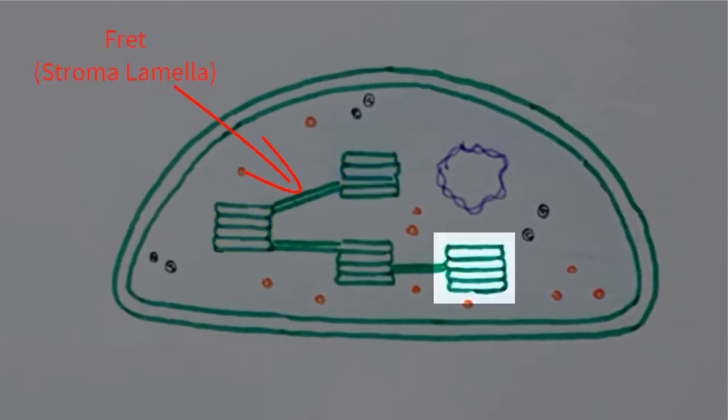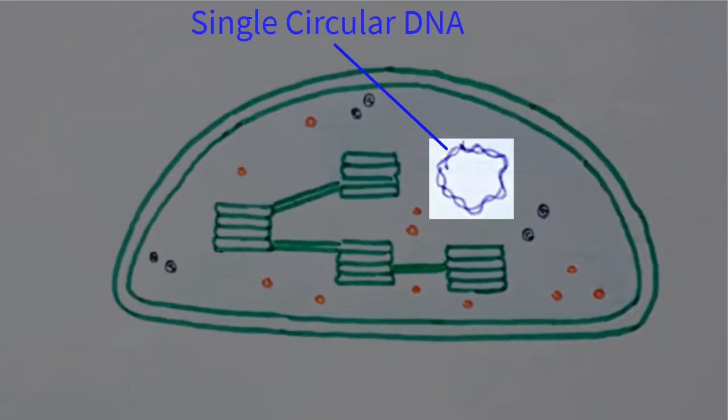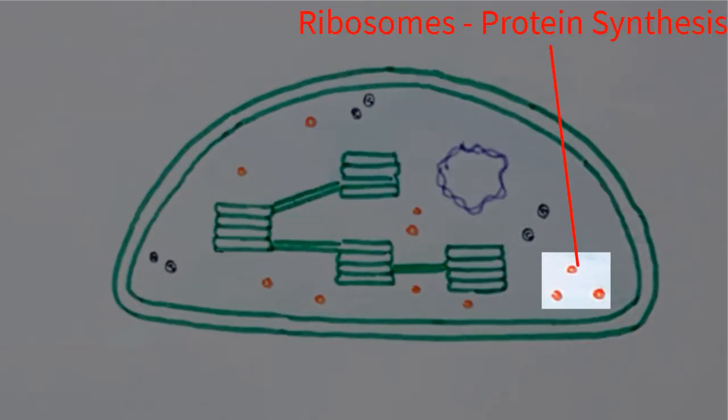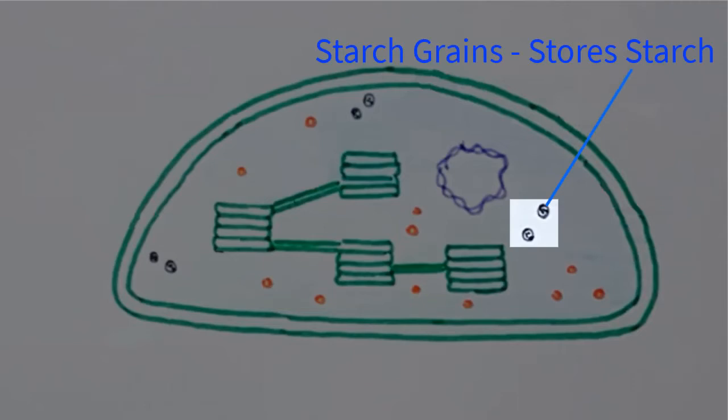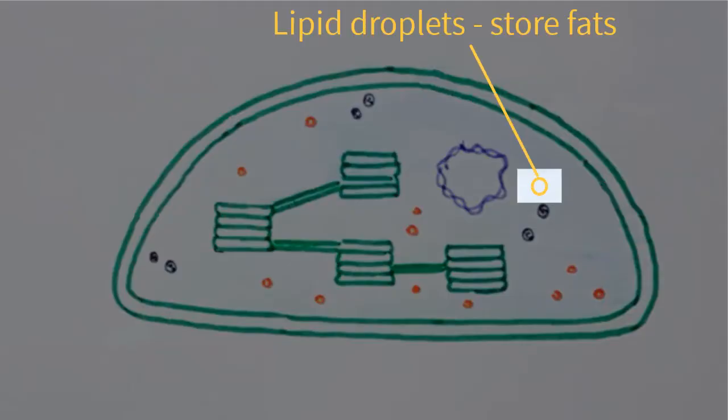Multiple grana are connected to each other by tube-like structures known as frets or stroma lamella. The stroma of the chloroplast contains circular DNA, ribosomes which help in protein synthesis, starch granules which store starch, and lipid droplets for storage of fats.